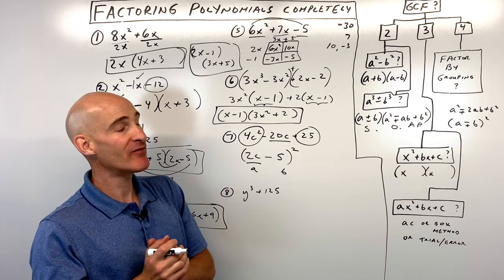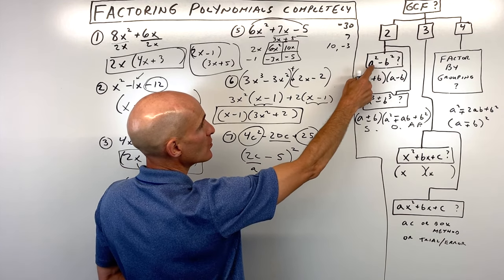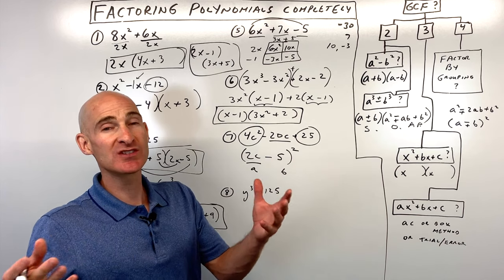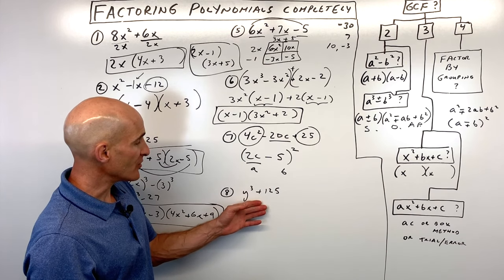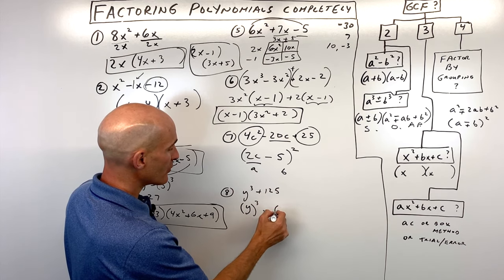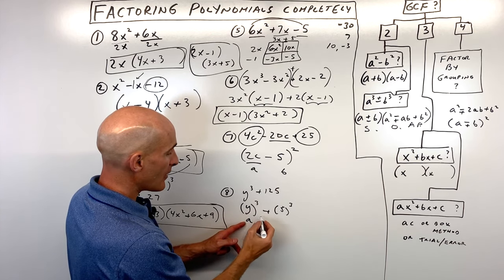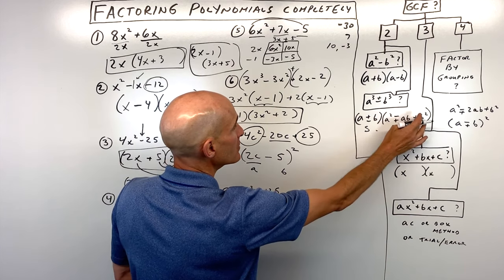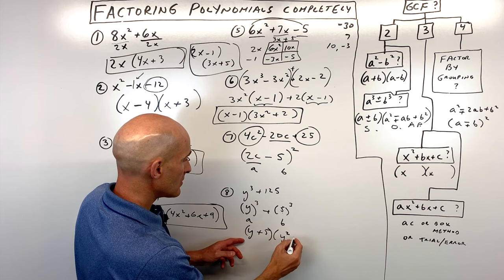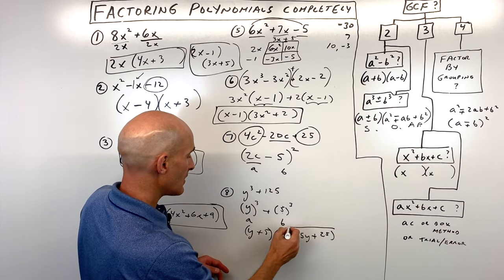Number eight, y cubed plus 125. No greatest common factor, and we have two terms. Is it a sum of two cubes, difference of two cubes, or difference of two squares? It looks like a sum of two cubes, because y times y times y and 5 times 5 times 5 is 125. Our a value is y and b value is 5. Using the sum of two cubes formula: y plus 5, times y squared minus 5y plus 5 squared which is 25.